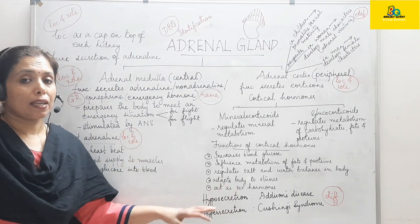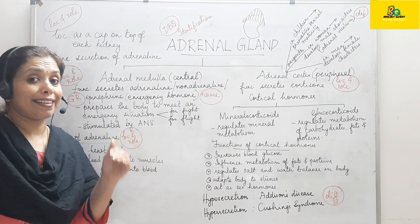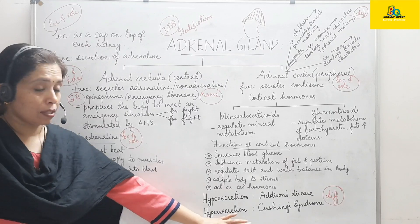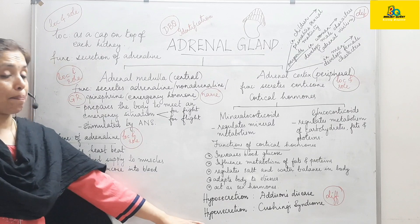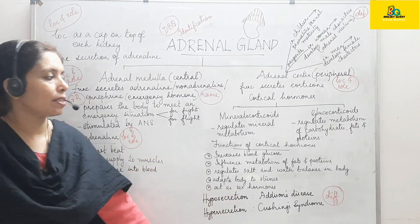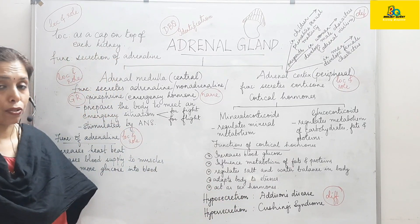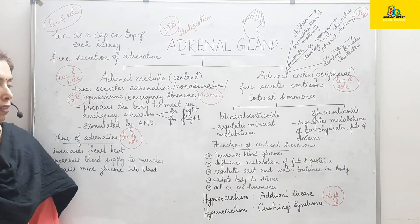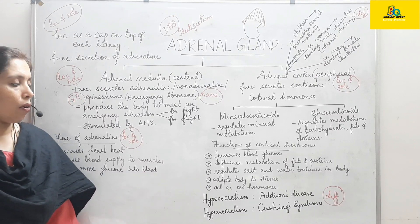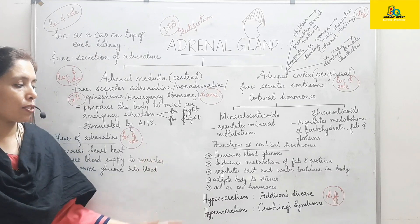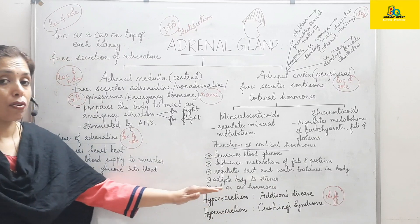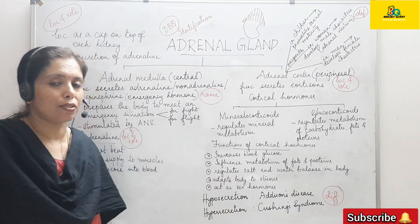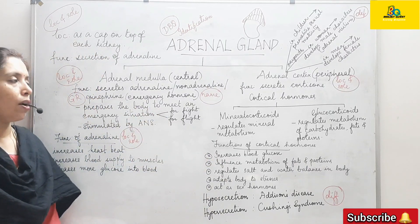Hyposecretion of cortisone from the adrenal cortex results in a condition called Addison's disease, and hypersecretion of cortisone from the adrenal cortex leads to a condition called Cushing's syndrome. You can expect a differentiation question between these two. Remember: Addison's disease is caused by under-secretion (hyposecretion) of cortisone, whereas Cushing's syndrome is due to over-secretion (hypersecretion) of cortisone from the adrenal cortex.